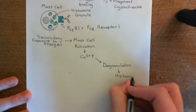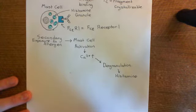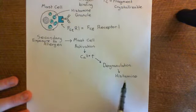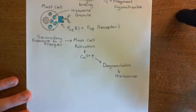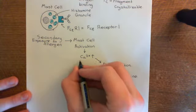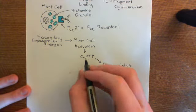Mast cells are basically sentinel cells that are always on the lookout for any sort of disturbance. When they find a disturbance, they're going to release all sorts of alarm signals. One of these alarm signals is histamine, but that's not the only alarm signal — many other alarm signals are going to be released.